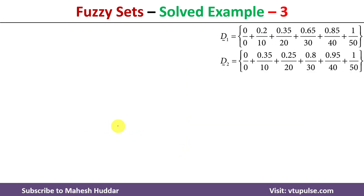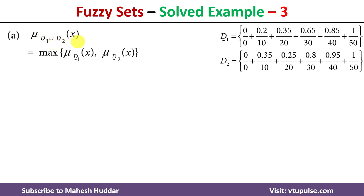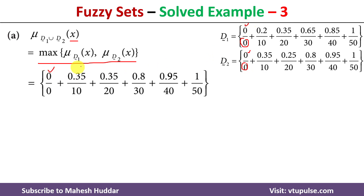Once we have the two fuzzy sets, we need to find the membership value of x in the union of D1 and D2. This is calculated using the formula: maximum of the membership value of x in D1 and the membership value of x in D2. For element 0, both sets have membership value 0, so the union gives 0. For element 10, the membership values are 0.2 in D1 and 0.35 in D2, so the union contains 0.35, and similarly for the remaining elements.